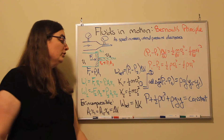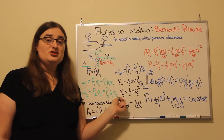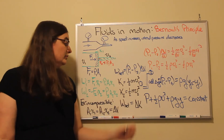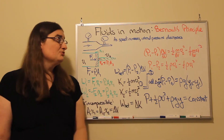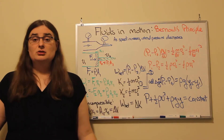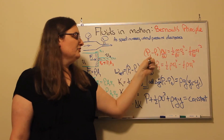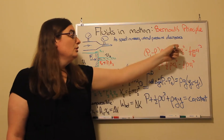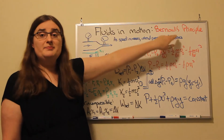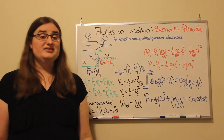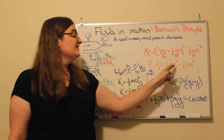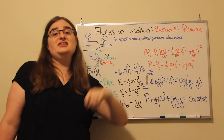From the work-energy theorem, the net work changes kinetic energy. The kinetic energy of the fluid on side two would be one-half times the mass of my fluid times the speed on side two squared. On side one, it's one-half times the mass times the speed on side one squared. If I set those two equal to each other and divide by the volume of the fluid, that leaves on the left the pressure on side one minus the pressure on side two. On the right-hand side, I have mass over volume, which for an incompressible fluid is exactly our density, which is a constant. So pressure on side one minus pressure on side two equals the kinetic energy density on side two minus the kinetic energy density on side one.